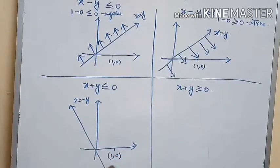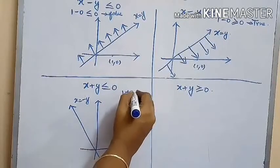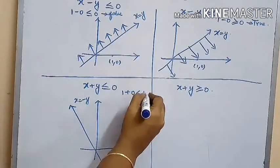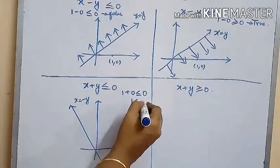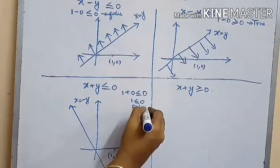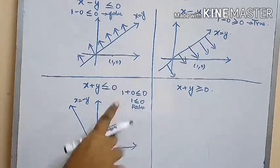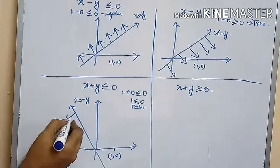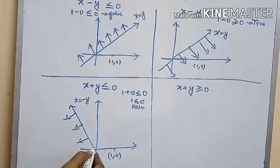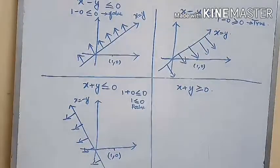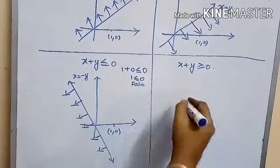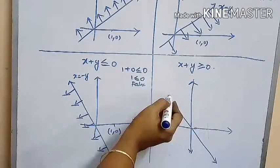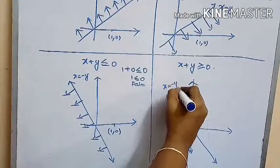Now mark the point (1, 0) and substitute its value into the inequality X minus Y less than or equal to zero. We get 1 is less than or equal to zero, which is a false statement — 1 can never be less than zero. So we should not shade the region containing the point (1, 0); the solution space should be away from it. For X plus Y less than or equal to zero — the line is X equals negative Y — substituting point (1, 0) we get 1 greater than or equal to zero, which is true, so the solution space is the region containing the point (1, 0).